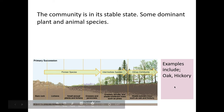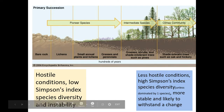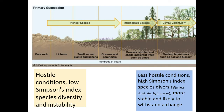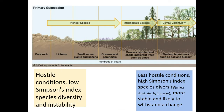This climax community is stable and there may be some dominant animal and plant species present. Starting from bare rock we have very hostile conditions, very low species diversity, and it's unlikely to withstand changes — it's very unstable. Whereas in the climax community it's less hostile, there's higher species diversity, and it's more stable and likely to withstand change.